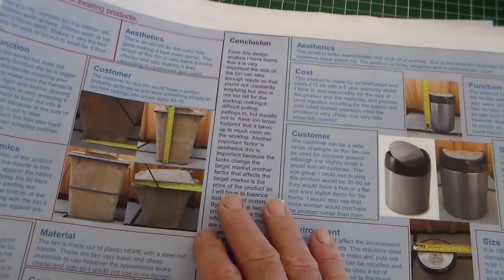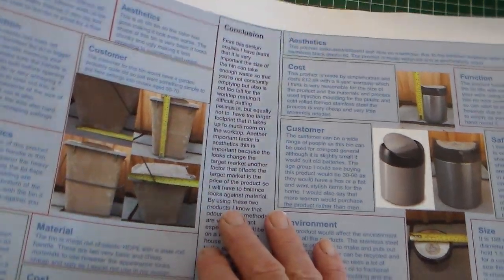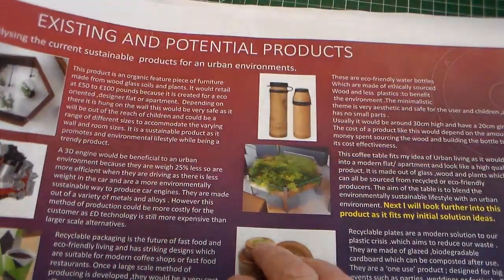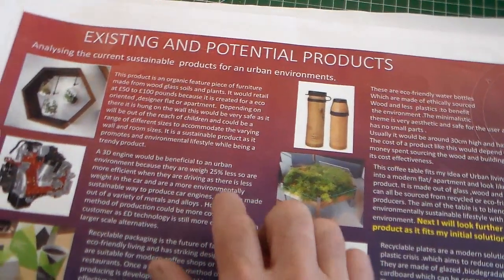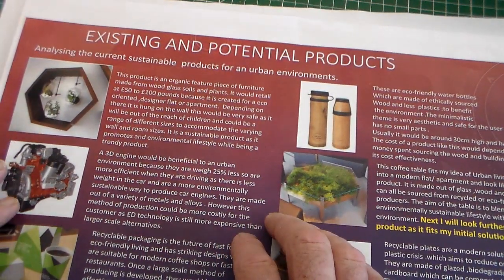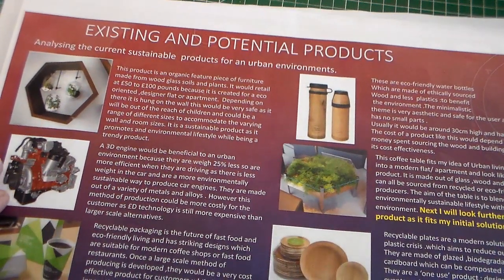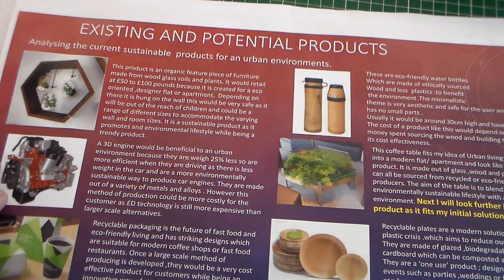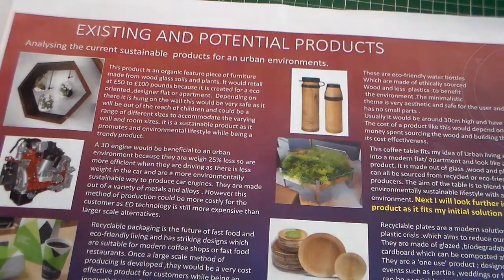So there are three examples of that — three very different layouts — and this is existing products, which we're calling sheet number four for our GCSE coursework. Okay, thank you for watching Mr. Ridley's Design and Technology.